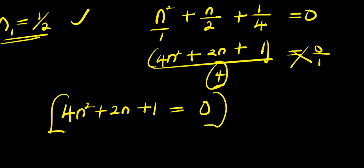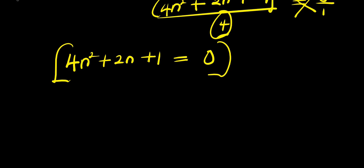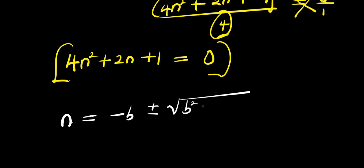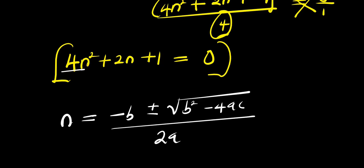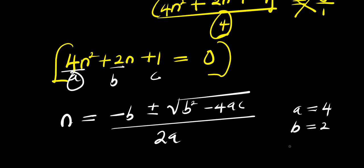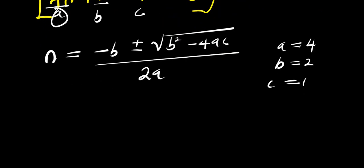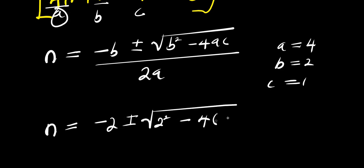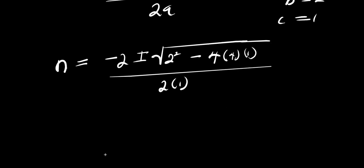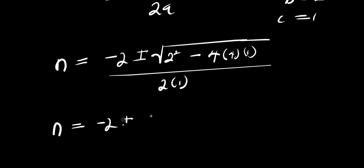To solve this I'll use the quadratic formula: n equals negative b plus or minus square root of b squared minus 4ac, divided by 2a. Here a equals 4, which is the coefficient of n squared; b equals 2, the coefficient of n; and c equals 1. Substituting: n equals negative 2 plus or minus square root of 2 squared minus 4 times 4 times 1, divided by 2 times 4.